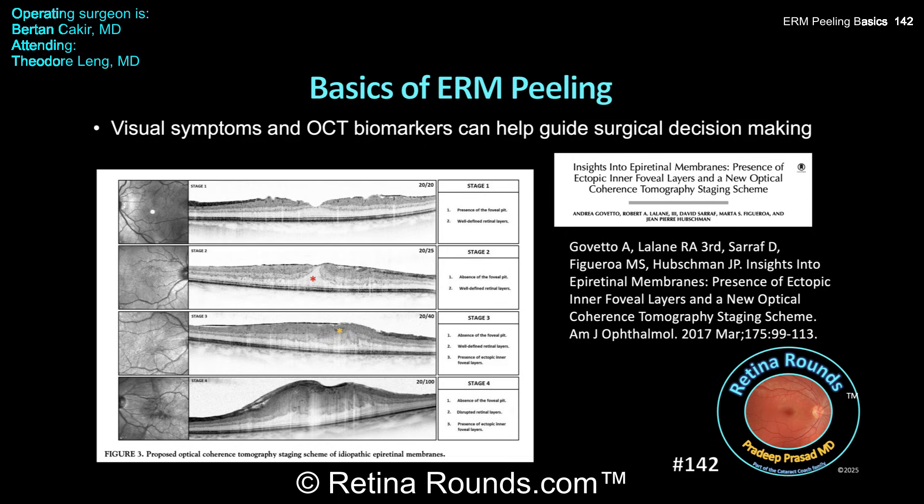A stage 1 ERM demonstrates a normal foveal contour, normal inner and outer retinal layers, and no ectopic layers over the fovea — meaning at the fovea we see the outer nuclear layer without overlying inner layers like the inner nuclear or inner plexiform layer, which is normal anatomy. A stage 2 ERM shows flattening of the foveal pit, but still well-defined retinal layers and no ectopic inner foveal layers. You can see elongation of the outer nuclear layer, highlighted by the red star. Stage 3 ERM is where we can start to see ectopic inner foveal layers, though retinal layers themselves are still well-defined.